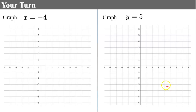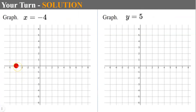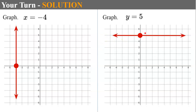Now it's your turn — go ahead and pause, then come back when you're ready to check your work. Welcome back. For x equals negative 4, we go to the x-axis and plot a point at negative 4, then draw a vertical line through that point with an x-intercept of negative 4. For y equals 5, we plot a point at 5 on the y-axis and draw a horizontal line through it, giving a y-intercept of 5.